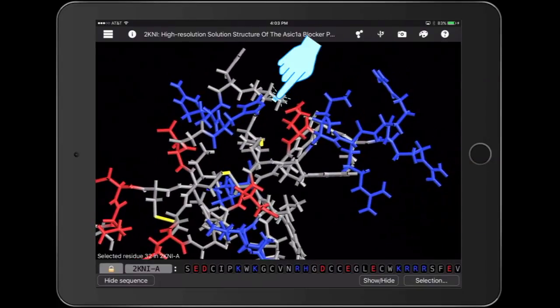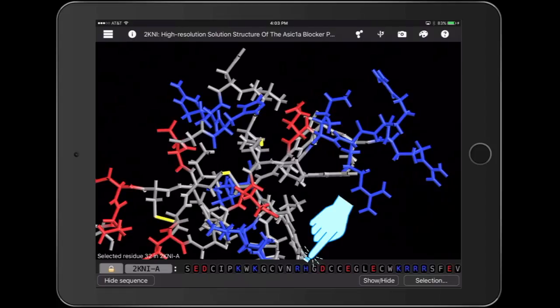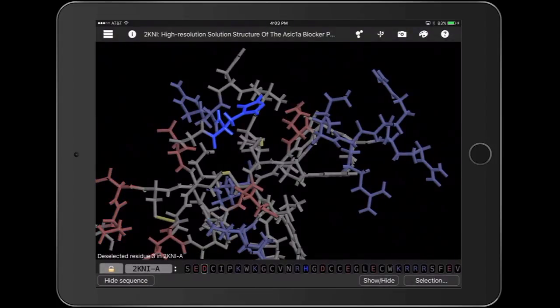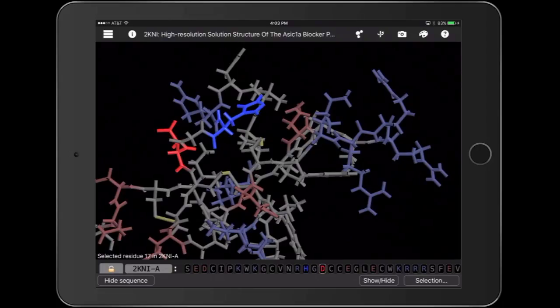So I'm going to investigate this a little bit further. I touch the H to highlight the histidine. I could tell it's a histidine because of its distinctive shape. And now I'm going to look to figure out what the negatively charged amino acid is. So I touch each one of the negatively charged amino acids in the sequence to highlight and deselect those amino acids until I find the one that's near the histidine.